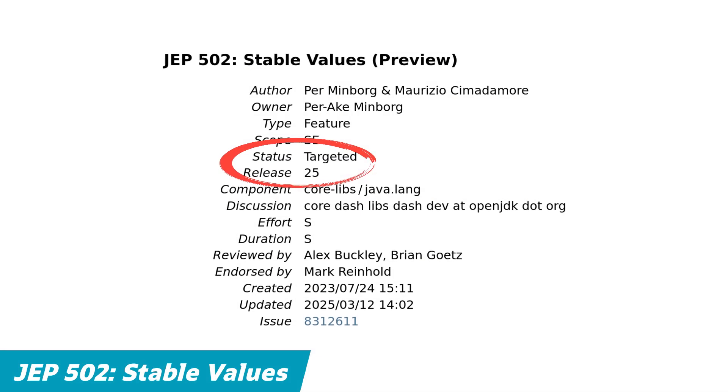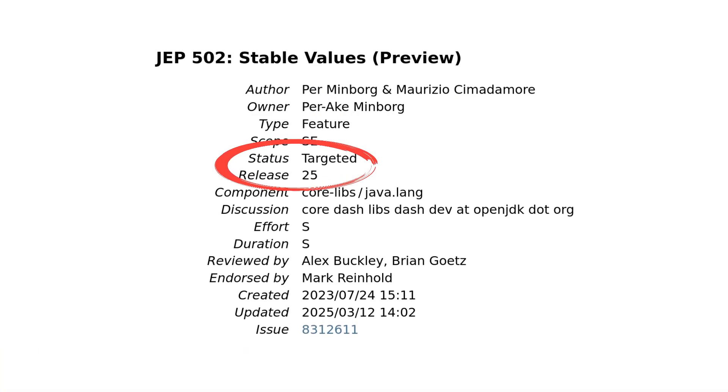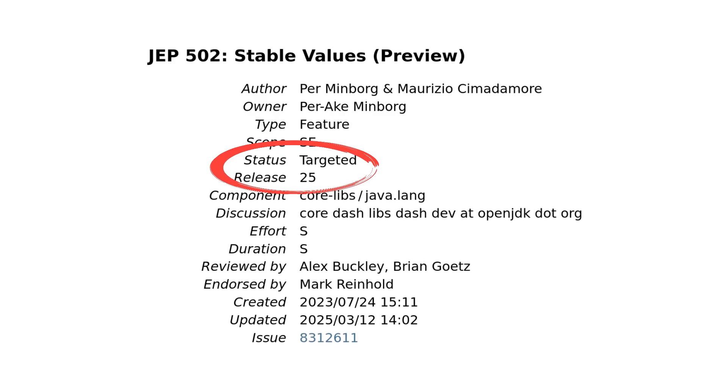The intent of JEP502 is to improve application startup time by decoupling constant value declaration from the actual class or object initialization, which will occur only once. But what's also more important is benefiting from JIT compiler constant folding, which was only previously available to JDK internal components.